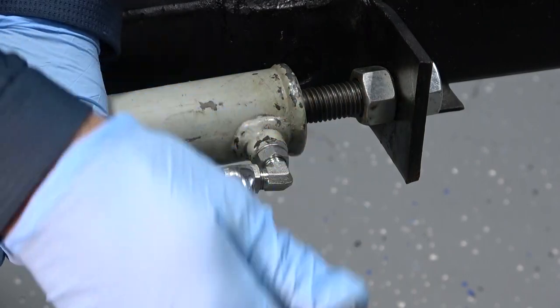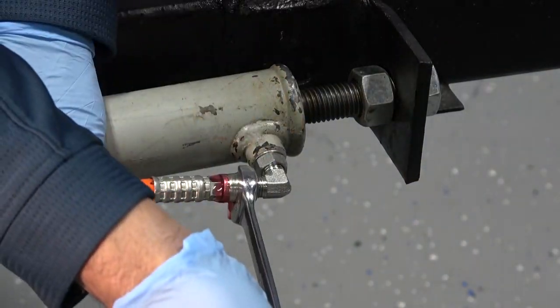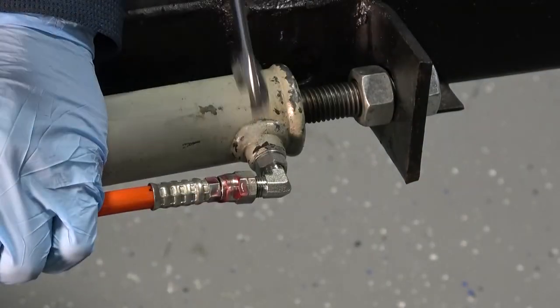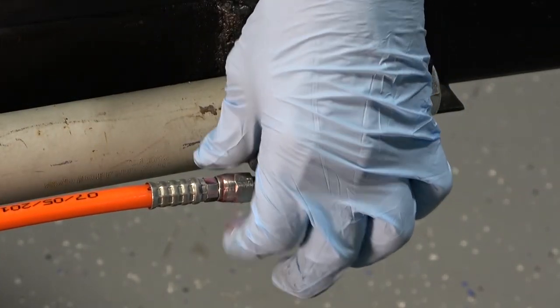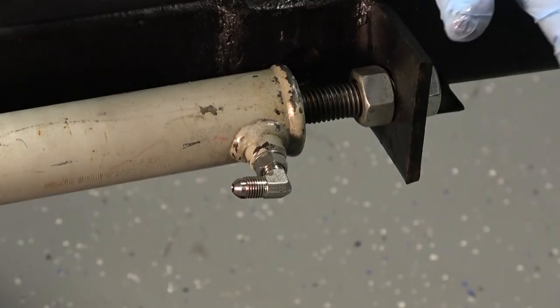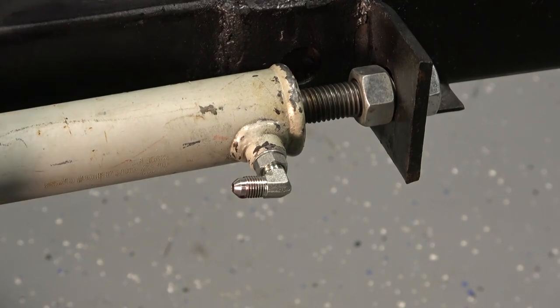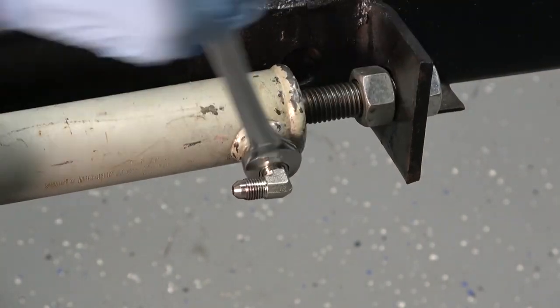With the cylinder fully retracted, remove the extend hose with a 9 1/16 inch wrench. Be careful when opening a line as fluid may leak out. If the fluid is under pressure, bleed the line before attempting to open it further to prevent injury.